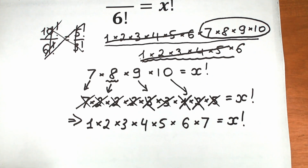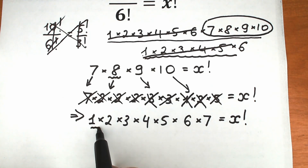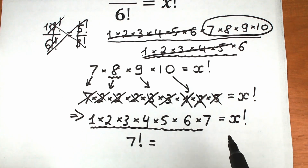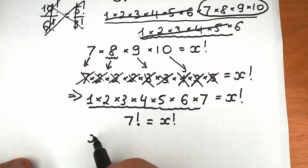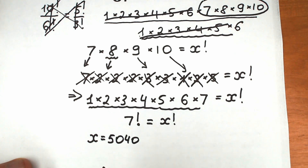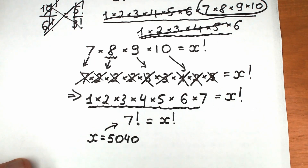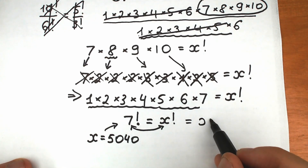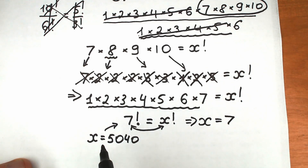The second most common mistake: a lot of students correctly write that this equals 7 factorial, because it's a product from 1 to 7. So 7 factorial equals x factorial. But then many students go further and compute the exact value of 7 factorial, finding it's 5040, and write x equals 5040. That is a really bad mistake in terms of math. Since 7! equals x!, the values must be the same, so x equals 7, not 5040.